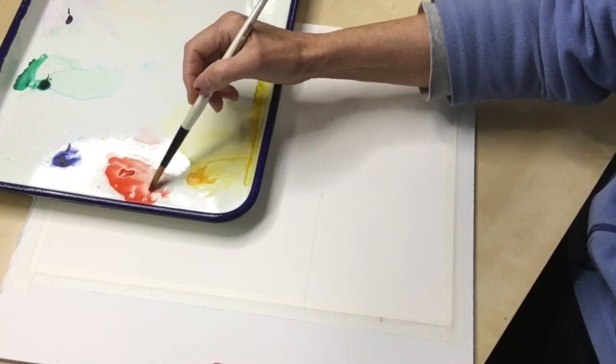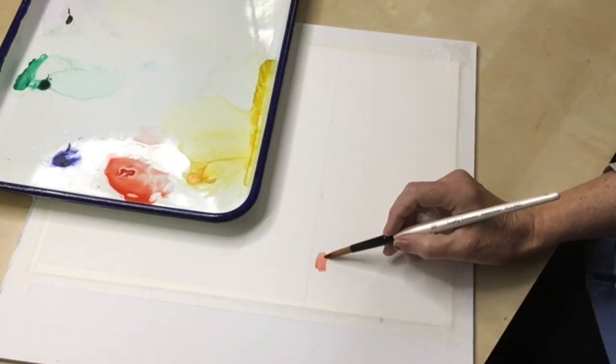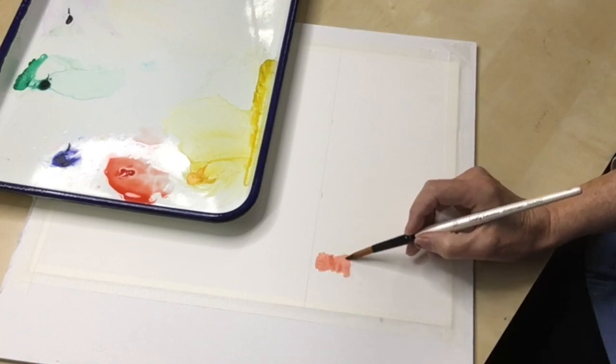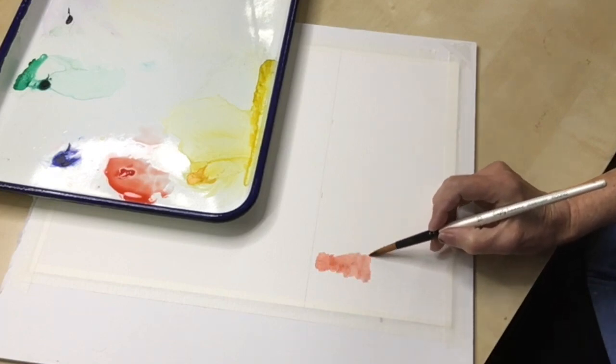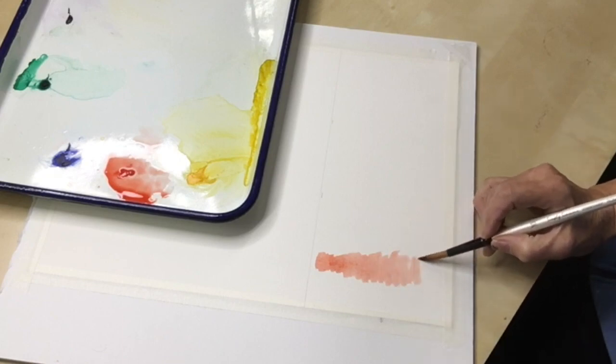Get a nice pool of color and then just take the brush and move it down the page all the way until you eventually run out of color. Then you can see how the color looks both lighter and darker.